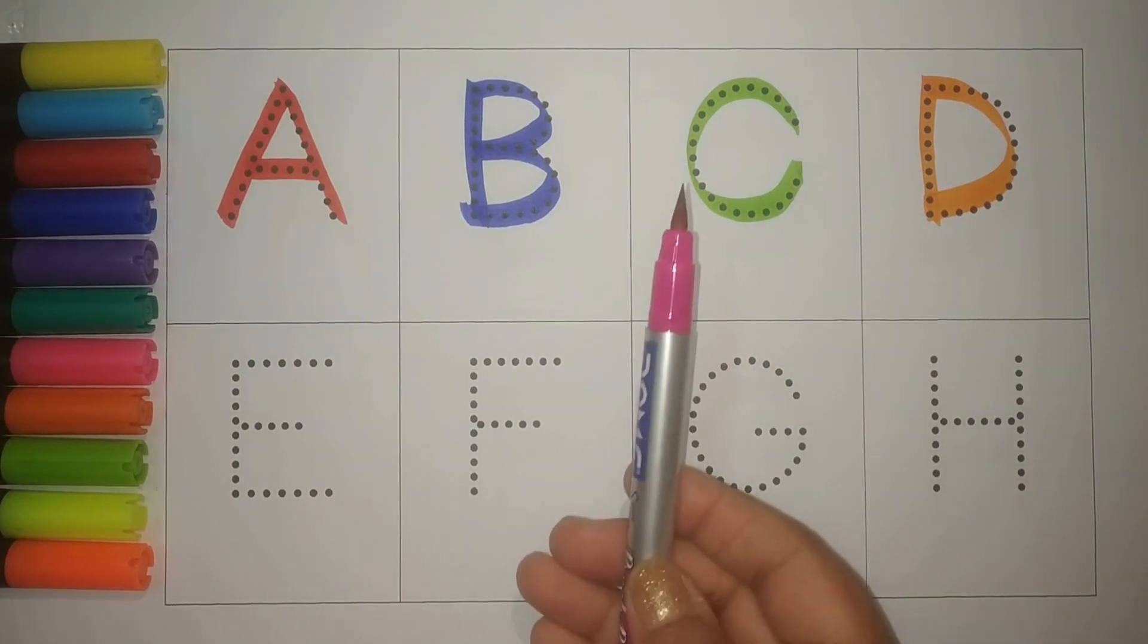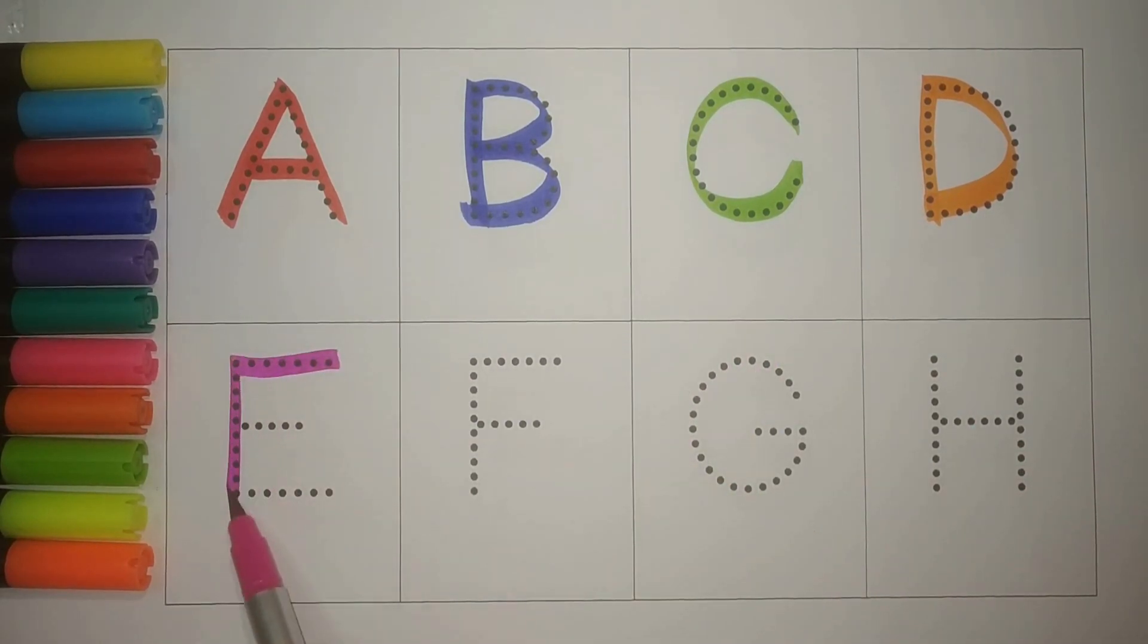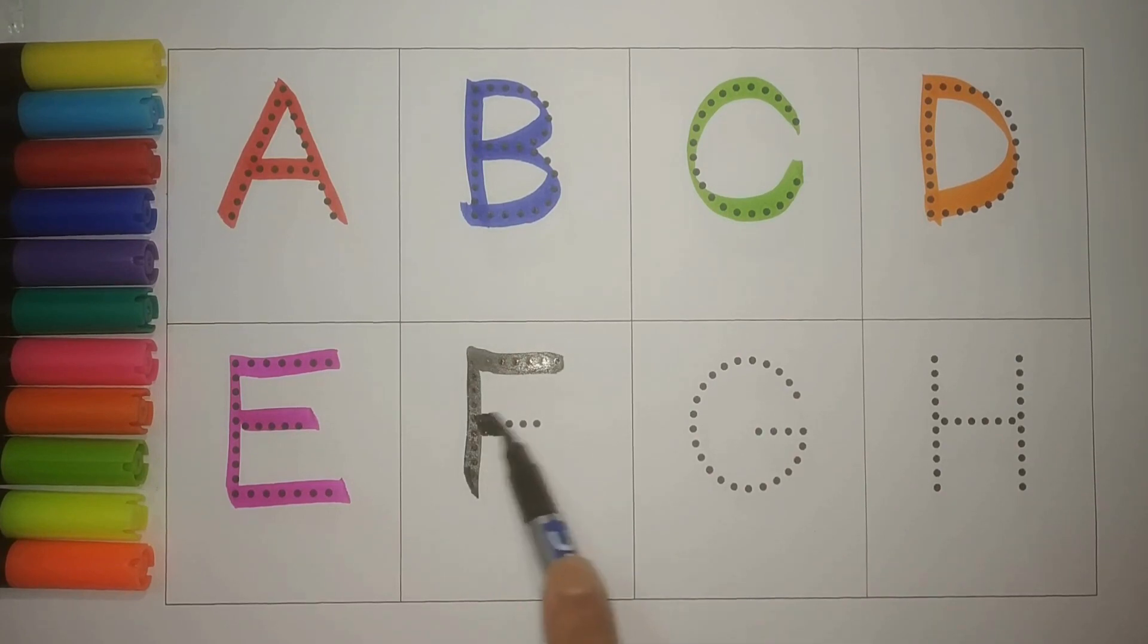Pink. E, E for elephant, haati. Black. F, F for fish, machli.